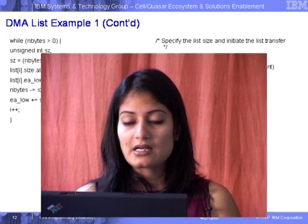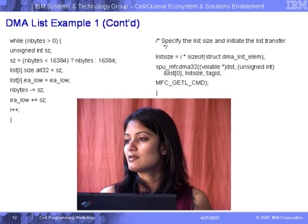The size is set to the SZ value computed, the effective address is initialized, then the size is decremented by the bytes just assigned to that list element so the next element gets the remaining bytes, and the effective address is incremented to get data from the new offset. The list size becomes i times sizeof(struct DMA_list_element), and then MFC get is called — in the new API, it's just mfc_getl, not mfc_dma32.